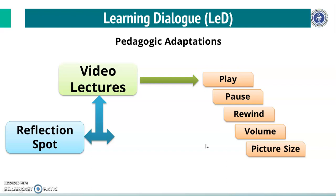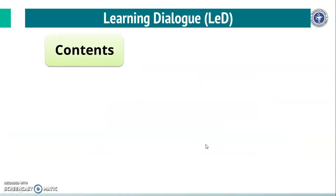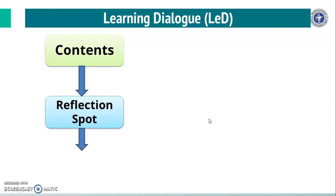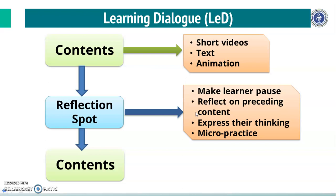There are two changes to be adapted in creating a video: one is adding a reflection spot and another is adding a learning by doing activity. In a learning dialogue, you can see the content, then a reflection spot, and again content. Content is either a short video, text, or animation. We know that the learner loses focus if watching the video passively, hence a reflection spot is added. Reflection spot provides the opportunity to make the learner pause, reflect on preceding content, and express their thinking.